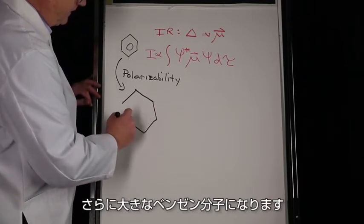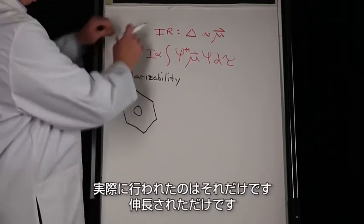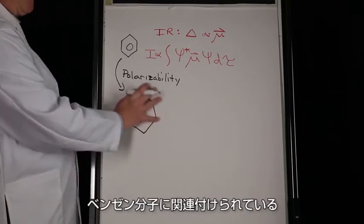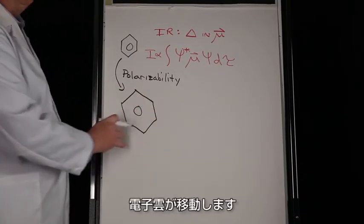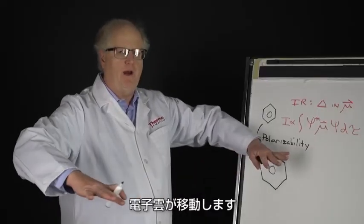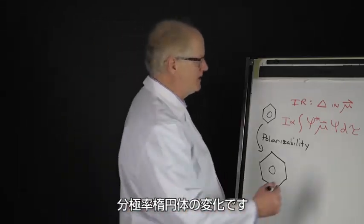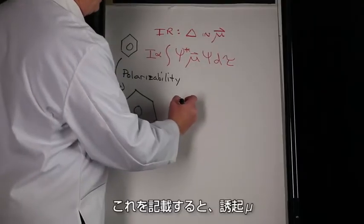The electron cloud that's associated with the benzene molecule has moved out. That is a polarizability change, a change in the polarizability ellipsoid.